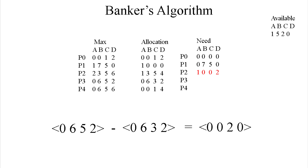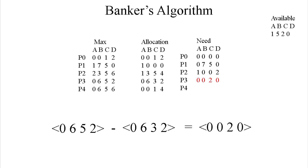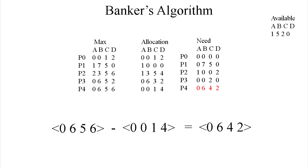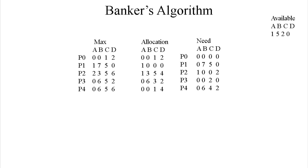I'm going to do this one a little quicker but not too fast. I grabbed 0, 6, 5, 6, which is P4 of the max matrix, and we're going to subtract 0, 0, 1, 4, which is P4 of the allocation matrix. We end up with 0, 6, 4, 2.